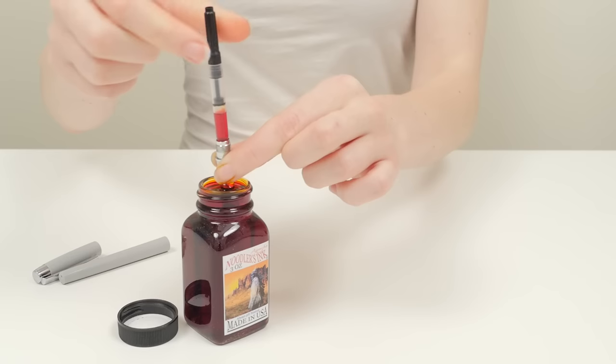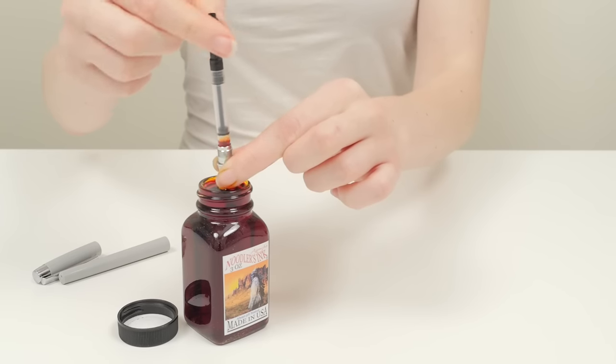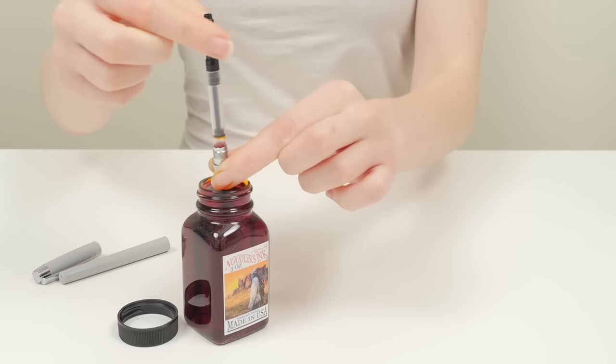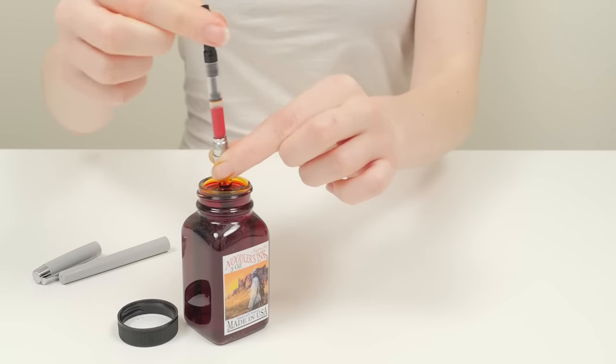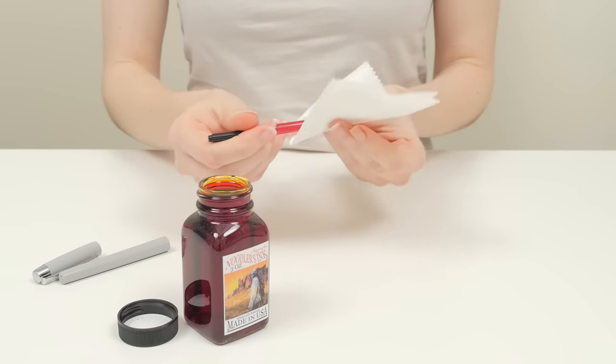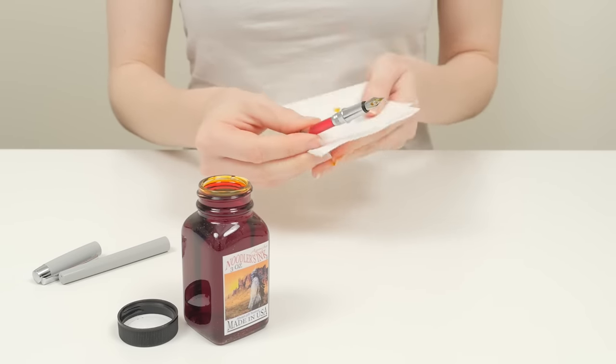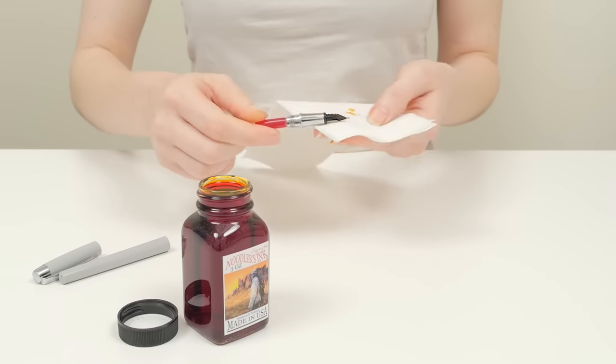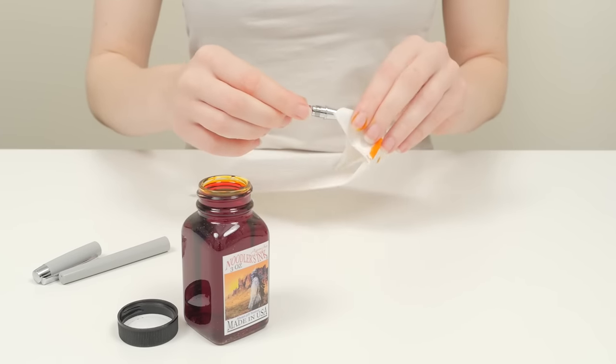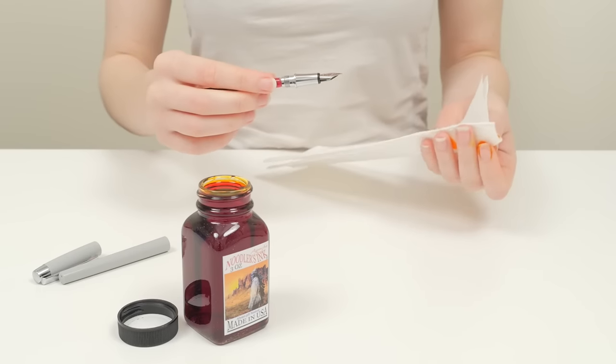Repeat until the converter is full or until no air bubbles come out of the pen when you twist the knob counterclockwise. Use a paper towel to wipe ink off the nib and grip section. While you're doing this, it's also a good idea to touch the paper towel to the nib for a few seconds to absorb any excess ink.